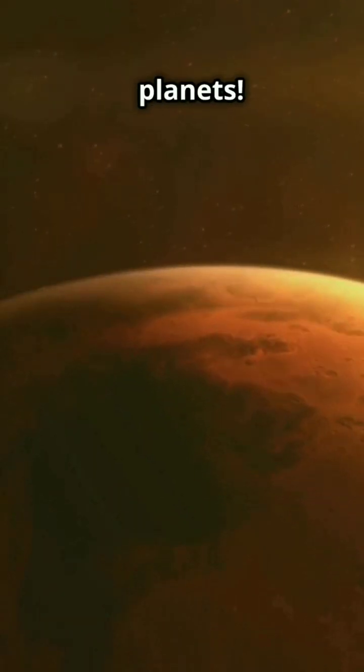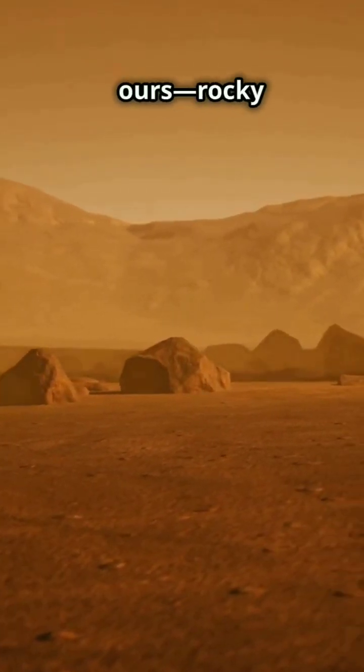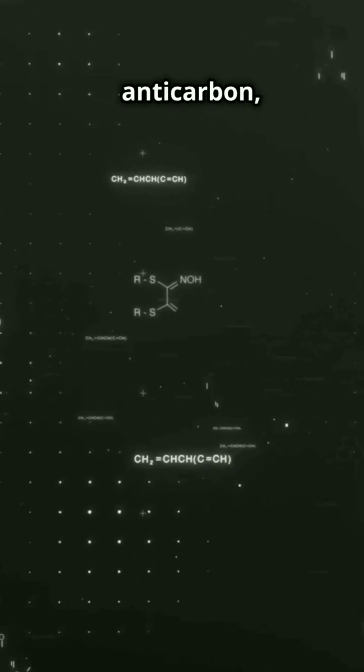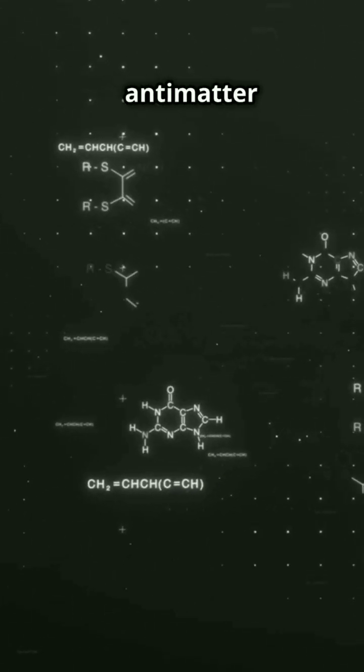Now think about antimatter planets. They'd have landscapes similar to ours, rocky mountains, vast oceans, maybe even familiar atmospheres, but made of anti-carbon, anti-oxygen, and other antimatter elements.